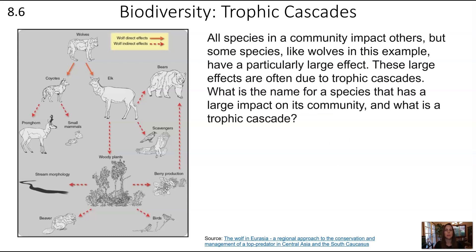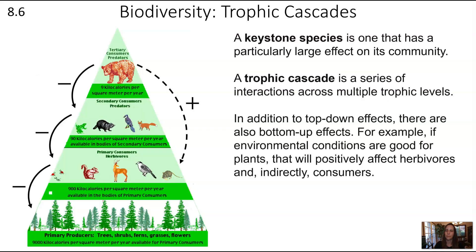All species in a community impact others, but some species like wolves have a particularly large effect — often due to trophic cascades. A trophic cascade is a series of interactions across multiple trophic levels. A species with a particularly large impact on a community is called a keystone species, and wolves would be considered a keystone species in this example.